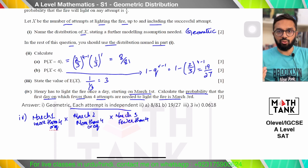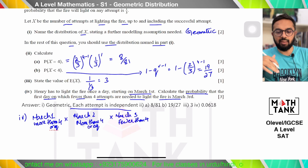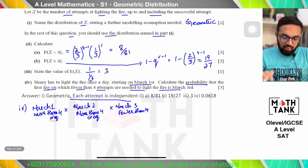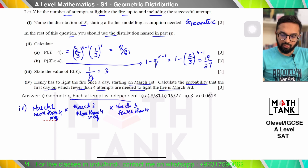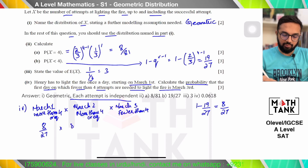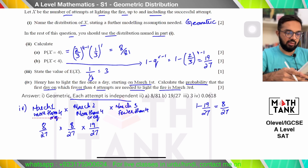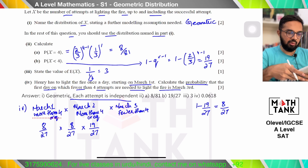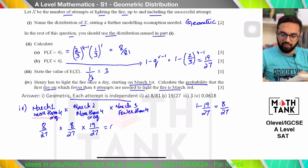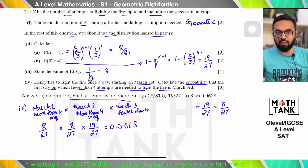I can treat this as a new geometric distribution where the probability of success (fewer than four attempts) is 19/27. Then fewer than four has probability 19/27, and more than or equal to four has probability 1 − 19/27 = 8/27. So the answer is (8/27) × (8/27) × (19/27), which gives 0.0618.